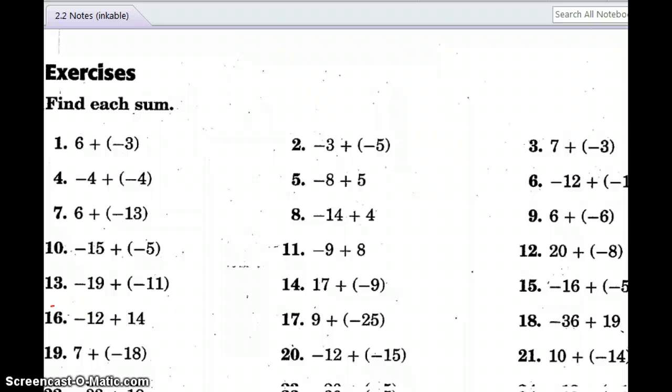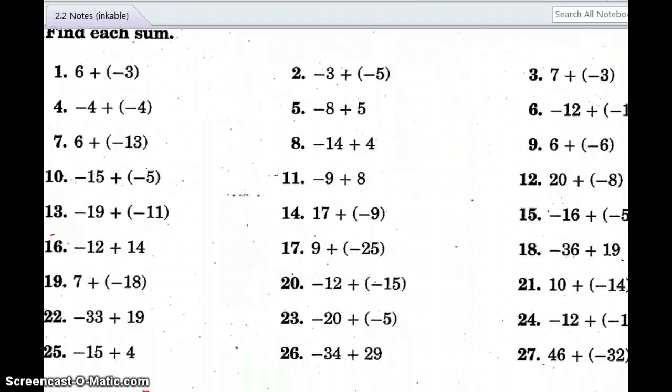So I'm going to work a few of these with you just to get you started. Then I'm going to leave the rest for you to do on your own. So number one, we have opposite signs. So that means I'm going to subtract. And six minus three is three.